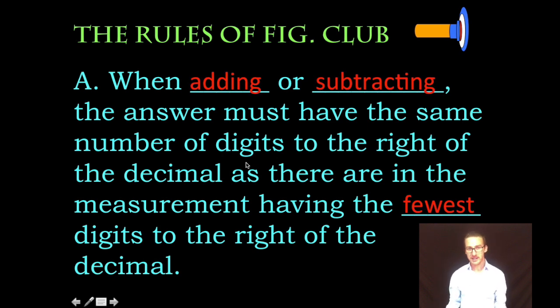When you are adding or subtracting, plus or minus, the answer must have the same number of digits to the right of the decimal as there are in the measurement having the fewest digits to the right of the decimal.